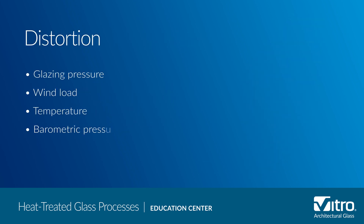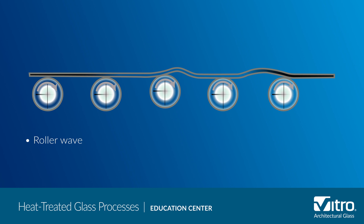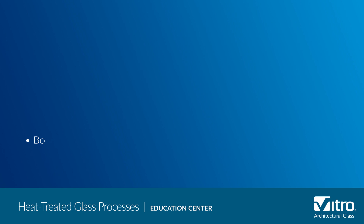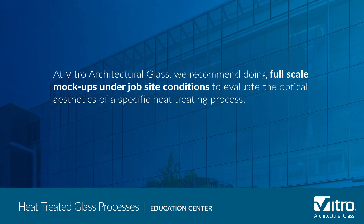Optical image distortion occurs in glass for many reasons, including glazing pressure, wind load, temperature, barometric pressure changes, and changes in altitude between where an IG is made and where it is installed. Because of its fluidity at high temperatures, glass is also susceptible to roller wave, bow, and warp while it is being heat treated. Glass distortion can also occur due to strain patterns in heat treated glass or interference fringe patterns in the fabrication of insulating glass units.